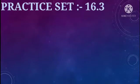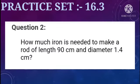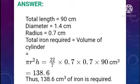Practice Set 16.3, Question 2: How much iron is needed to make a rod of length 90 cm and diameter 1.4 cm? Given: length = 90 cm, diameter = 1.4 cm. Therefore, radius = D/2 = 1.4/2 = 0.7 cm.